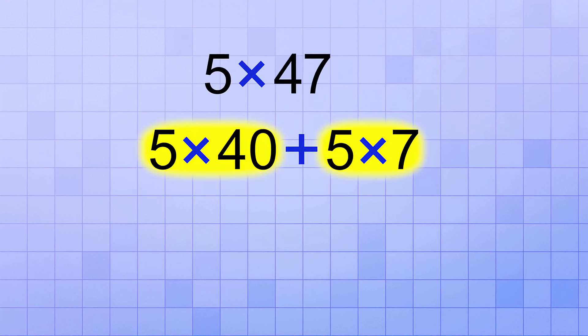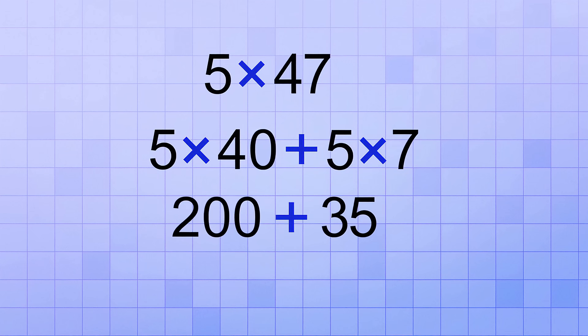Those two multiplications are easy to do. 5 times 40 is 200, and 5 times 7 is 35. So our answer is 200 plus 35, or 235.